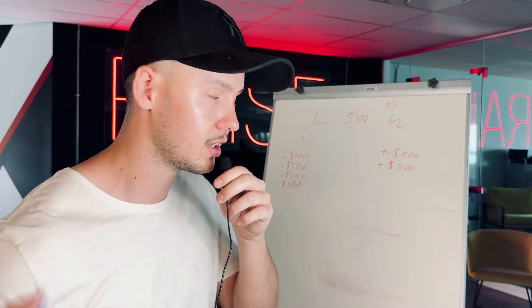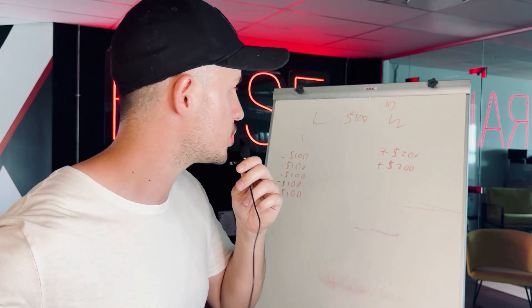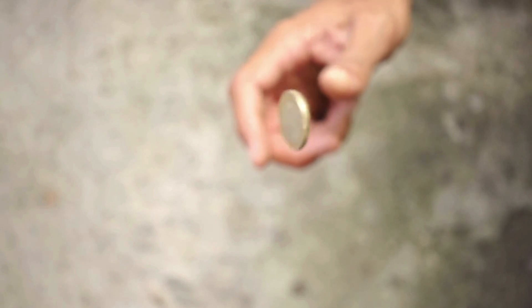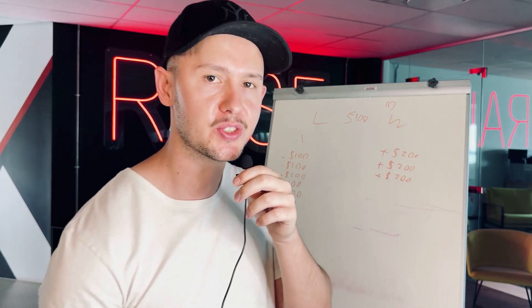Number seven we do Tails again — Heads again, so we lose another $100. Number eight we do Heads — and it's Heads, so we win $200. Number nine we do Heads again — it's Tails, so we lose $100. And for the final trade, number ten, we do Tails — and it's Tails, so we win $200.